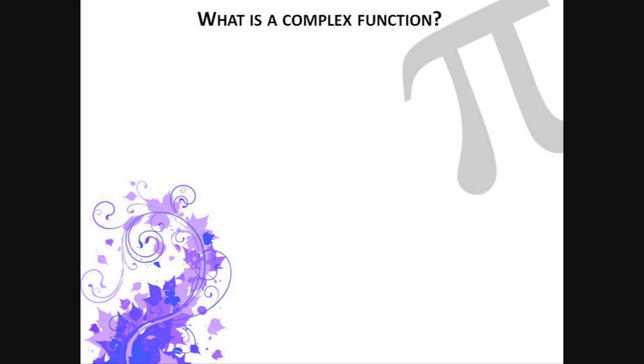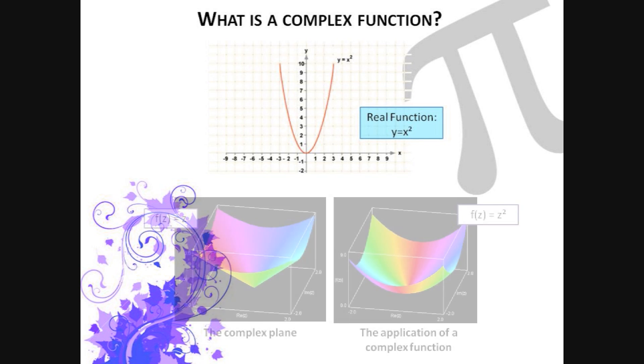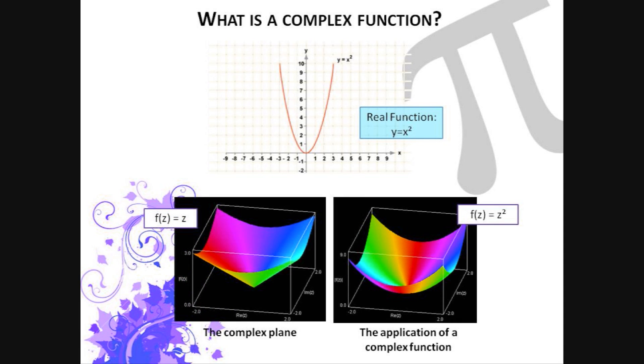Unlike a normal function, in which a real number is mapped to another real number, the function of a graph cannot be drawn like we would draw a parabola for x squared. Instead, the complex plane of numbers is distorted and stretched by the application of the function f of z. A complex function maps the whole complex plane to another complex plane, which becomes distorted or stretched by the application of the function.